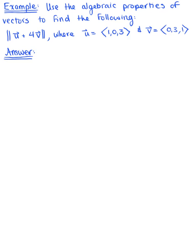Use the algebraic properties of vectors to find the following. Here we're asked to find the magnitude of the vector defined as the sum of vector u plus 4 times vector v, where u is the vector with components 1, 0, 3, and v is the vector with components 0, 3, 1.